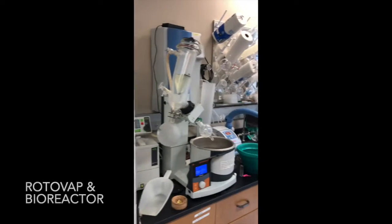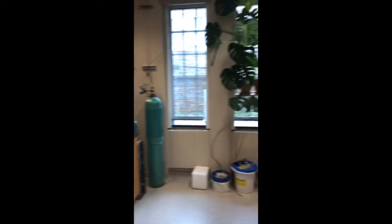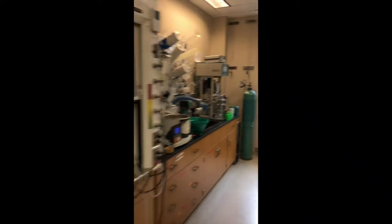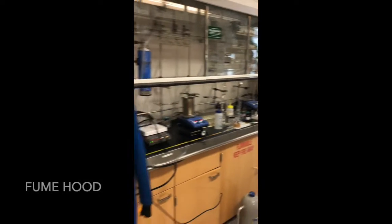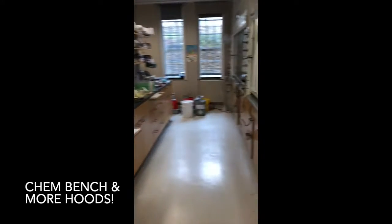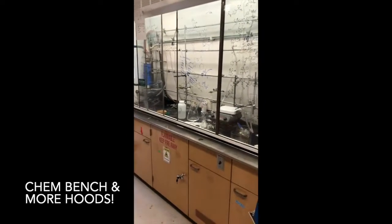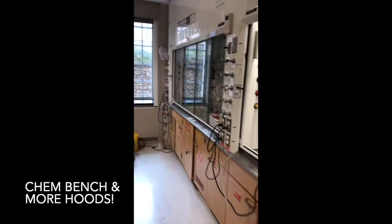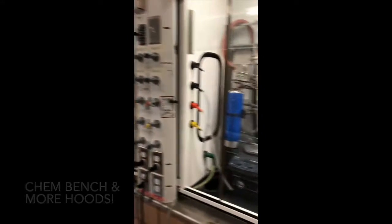Here we also have rotovap and bioreactor. Now you also see the first of our chemistry fume hoods. On the other side of this we see more hoods, more chemistry bench, all of these sorts of things that help the chemistry side of the lab operate.